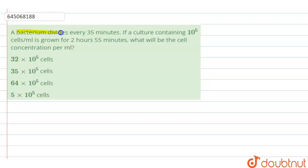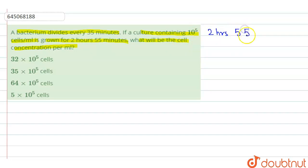Hello students. The question says: a bacterium divides every 35 minutes. If a culture containing 10 to the power 5 cells per milliliter is grown for 2 hours 55 minutes, what will be the cell concentration per milliliter? So first, let's convert 2 hours 55 minutes into minutes — that equals 175 minutes.